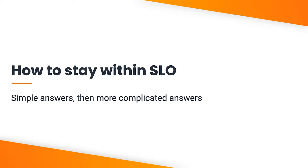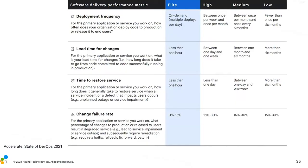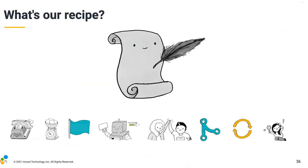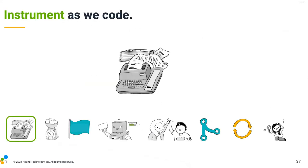So how do we stay within the SLO? You can have many small breaks, but not big breaks. Elite teams can afford to fail quickly. Our recipe: we instrument as we code. We practice observability-driven development. Before we even start implementing a feature, we ask: how is this going to behave in production? And then we add instrumentation for that.